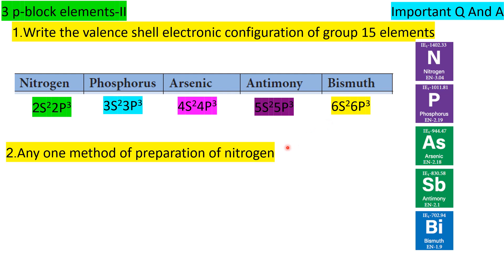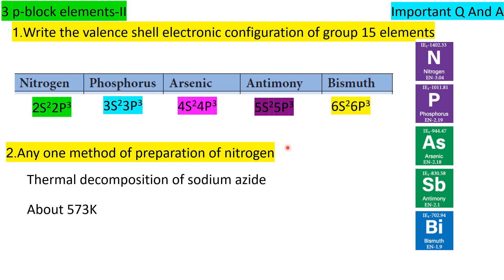Any one method of preparation of nitrogen: thermal decomposition of sodium azide (NaN₃). When sodium azide is heated to about 573 Kelvin, the equation is: 2NaN₃ → 2Na + 3N₂ at 573 Kelvin.